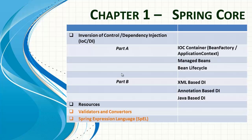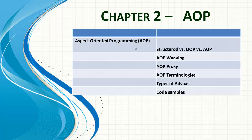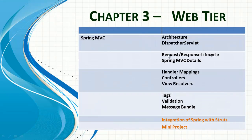Spring Core is the main chapter and will take around six to eight hours. After Chapter 1, we move on to Spring AOP covering its different topics, then to the web tier where we cover Spring MVC. At the end — shown in orange, so Level 2 — we'll see a basic introduction to Struts, integration of Struts with Spring, and a mini project.